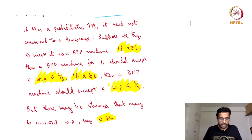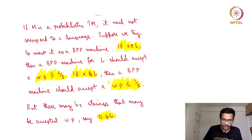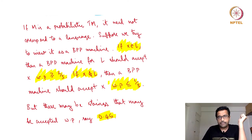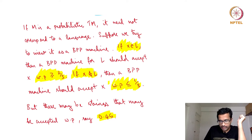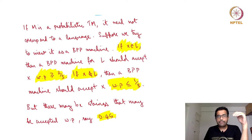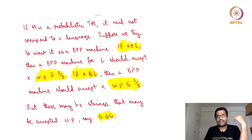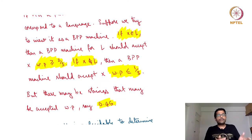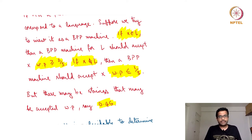You may recall the definition of BPP: if X is in language L, then the BPP machine for L should accept X with probability at least two-thirds. And if X is not in L, the BPP machine should accept X with probability at most one-third. So there is a gap between the acceptance probability of strings in L and strings not in L. What we ideally want is that all strings either get accepted with probability more than two-thirds or less than one-third — only then is it a BPP decider. But a probabilistic Turing machine could accept strings with probability say 0.45, and it is unclear where to put that string.